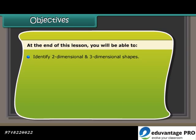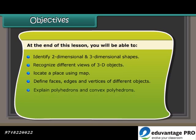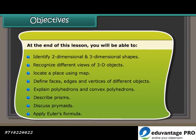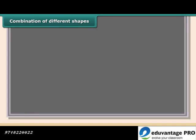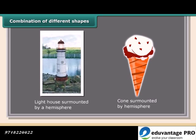At the end of this lesson you will be able to: identify two-dimensional and three-dimensional shapes; recognize different views of 3D objects; locate a place using a map; define faces, edges, and vertices of different objects; explain polyhedron and convex polyhedrons; describe prisms; discuss pyramids; apply Euler's formula; and understand combinations of different shapes used in day-to-day life.